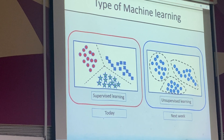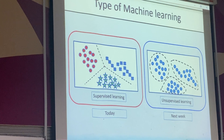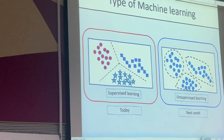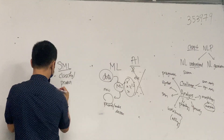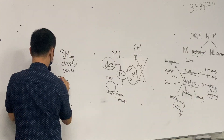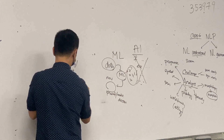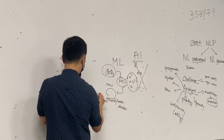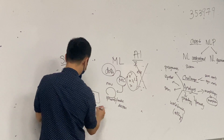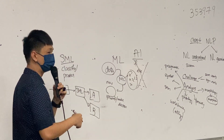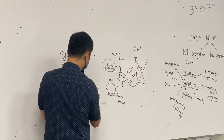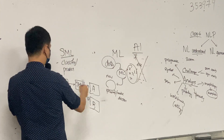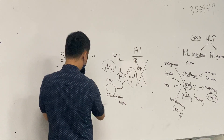Supervised learning is mainly used to classify or predict something new. We have some unseen data X, and this supervised machine learning needs to predict whether it belongs to class A or class B — where the classes are predefined. For example, A is female and B is male, or A is true and B is false, or A is a car and B is a motorbike.